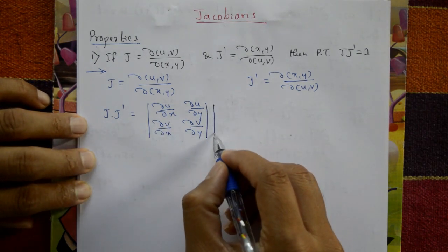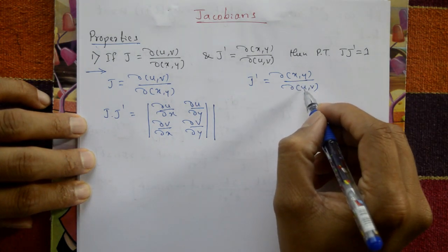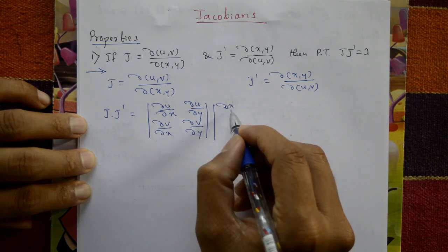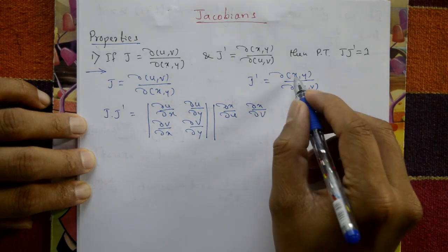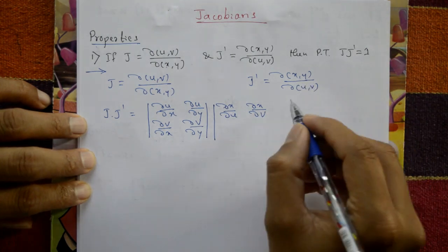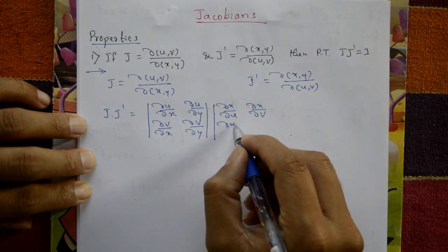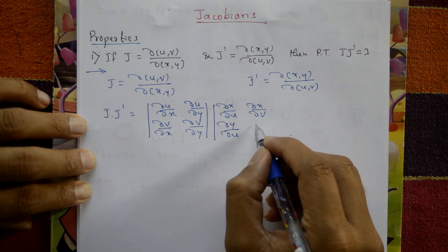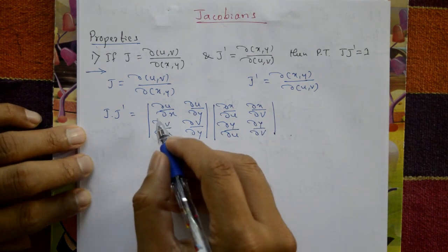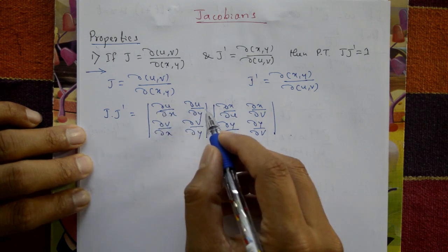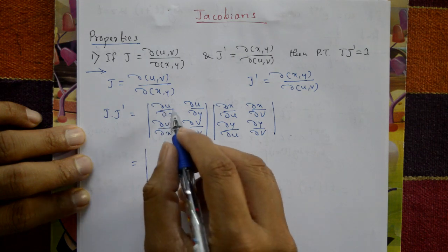And J' is again a determinant — differentiate x with respect to u and v: first row ∂x/∂u and ∂x/∂v, second row ∂y/∂u and ∂y/∂v. Now multiply J × J' using row into column multiplication.